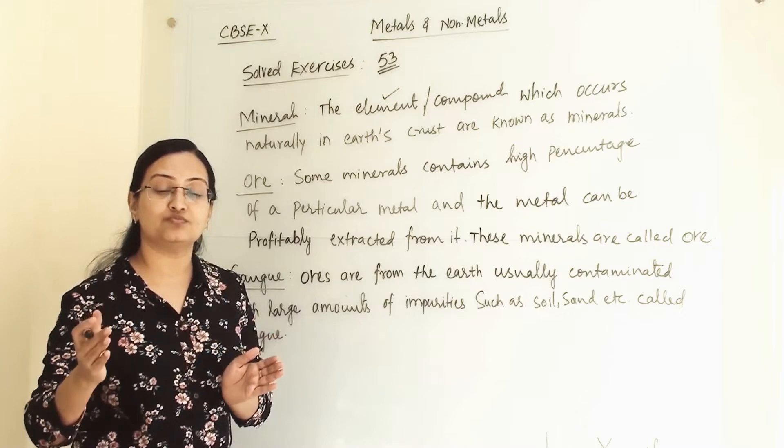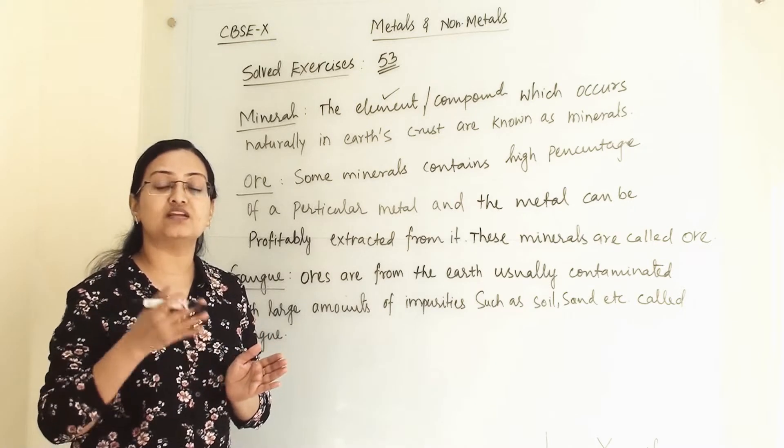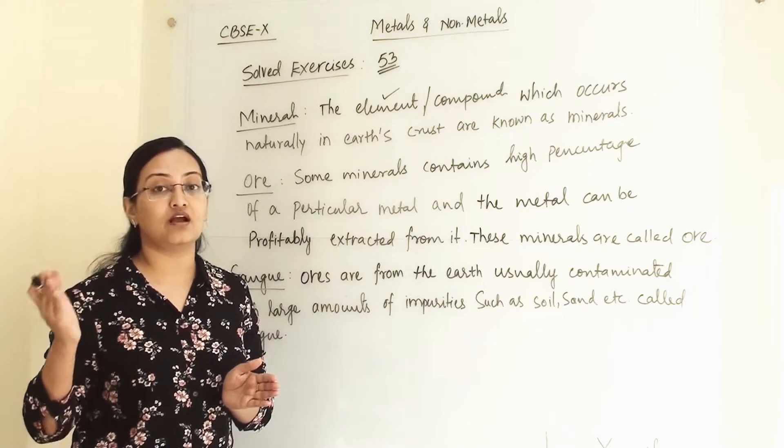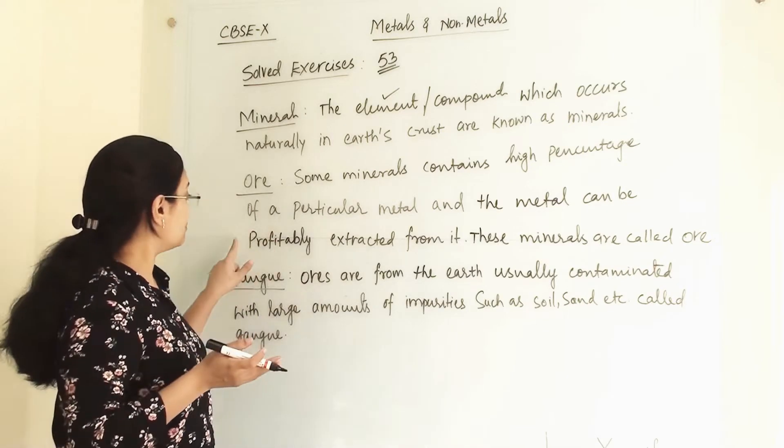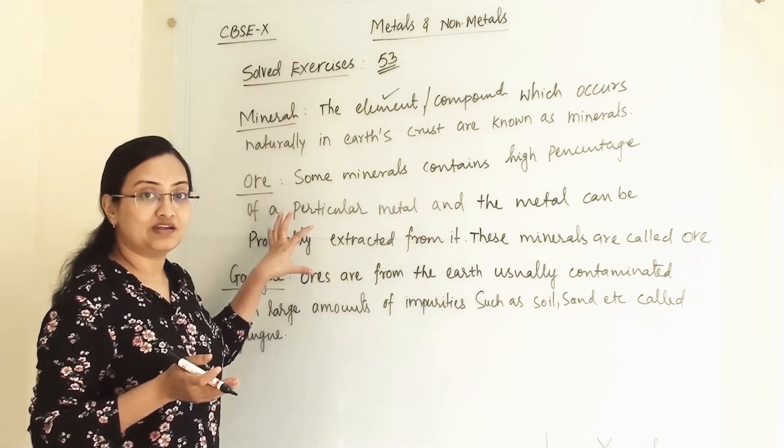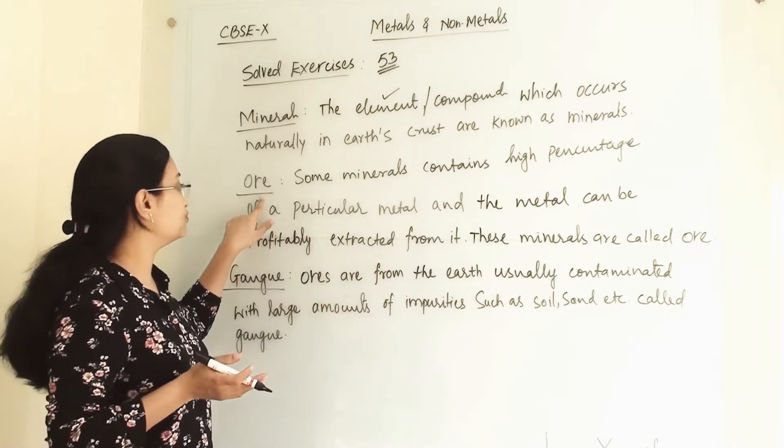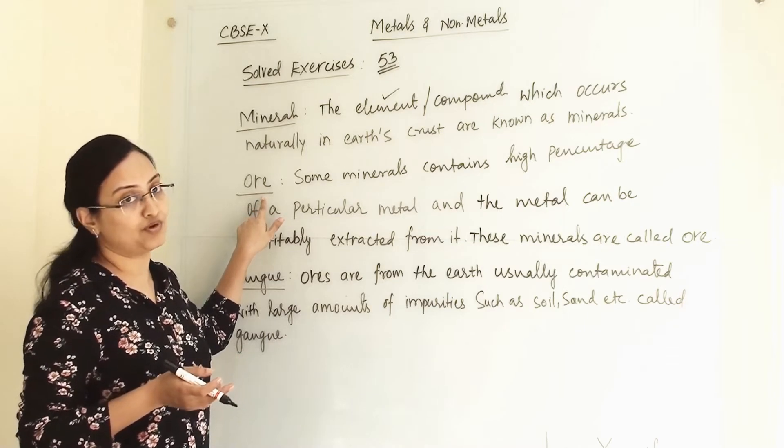That means the extraction process cost we can recover from it and the surplus charge we can count as profit. So that much amount of metal if present in any earth's crust, then it is known as ore of that particular metal.